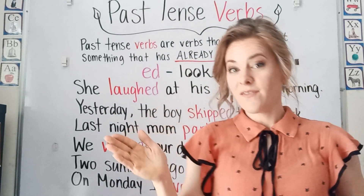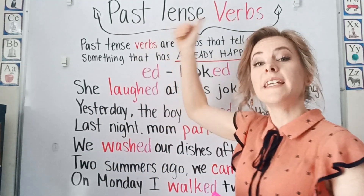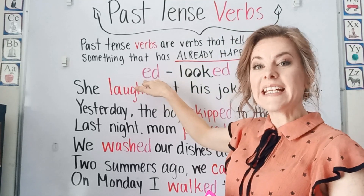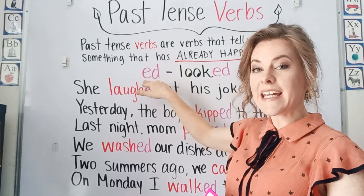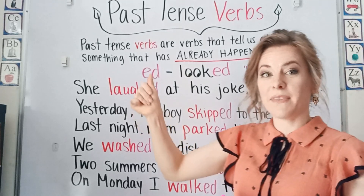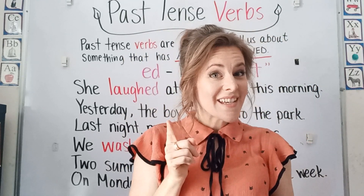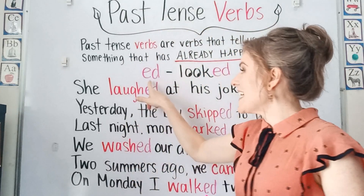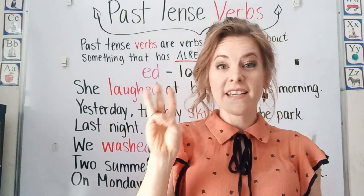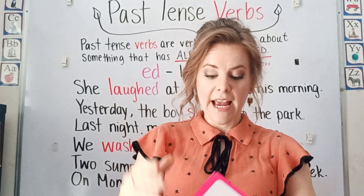Most of the time when you are taking a verb and making it past tense, you add E-D to the end of the word to make it something that has happened in the past. But the E-D has three sounds.